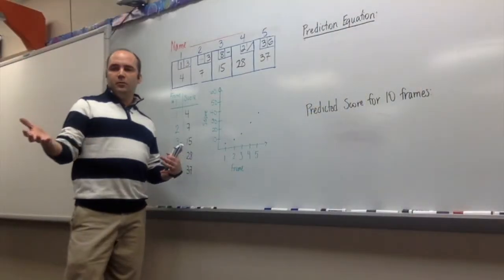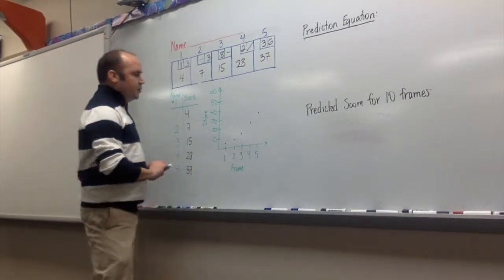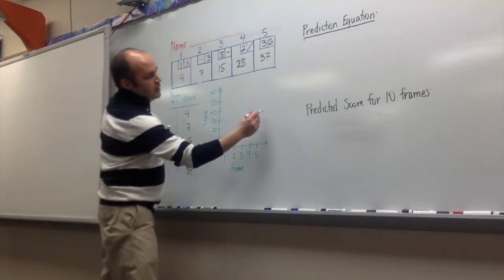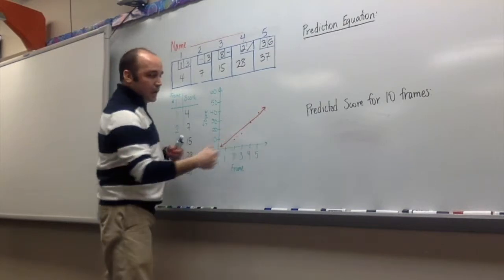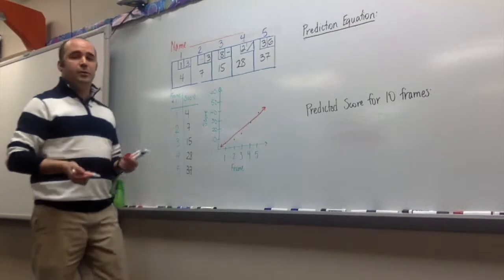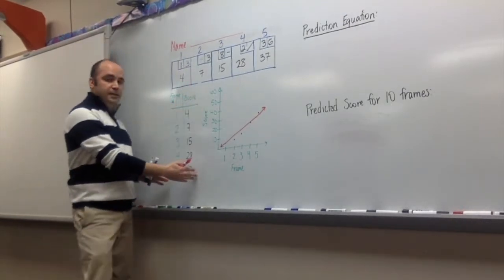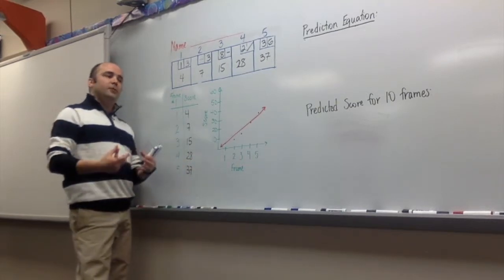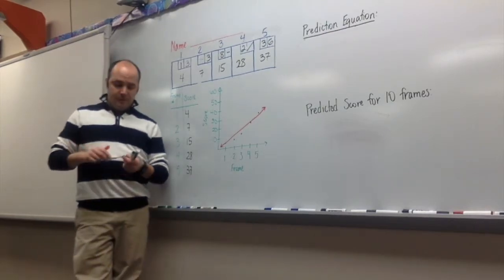Okay, so we have your frames all done — bowling with the Sphero, a little more exciting. So what we can do is you have your table, we plot your points, and we're going to make a line of best fit. Once we get your line of best fit, we're going to use your prediction equation. Once we have this table, we're going to create this table in your Desmos app. And once we get in the Desmos app, we're going to find your equation and we're going to predict your score for 10 frames.